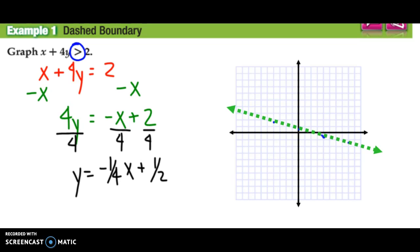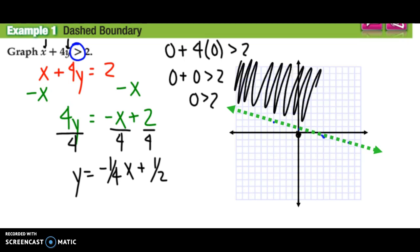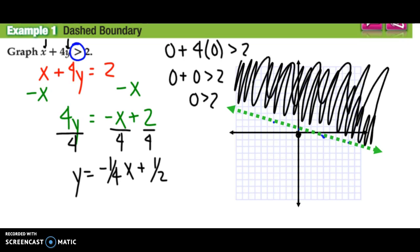So what I'm going to do is I'm going to try a point. Now the easiest one to always try is 0, 0 right here. Okay? No matter where it is, unless it's on the graph, you can try the point 0, 0. So if I put that into my equation, I put 0 in for x, 0 in for y, I get 0 plus 4 times 0 is greater than 2. So really that's saying 0 plus 0 is greater than 2, or 0 is greater than 2. Is that true? If not, that means the side that 0, 0 is in is not part of the boundary. So I shade above this one. So up top here where I've shaded, those are all possible solutions to my inequality.